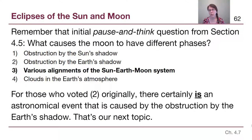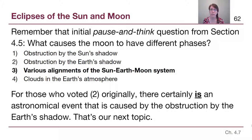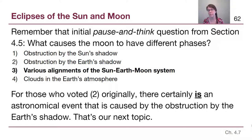We start with a reminder that when we discussed phases of the moon, we talked about the common misconception that the Earth's shadow is what causes our monthly phases of the moon. There certainly is an astronomical event that includes the Earth's shadow, and once we've learned about it, it may be more easily distinguishable in our minds what is a phases-of-the-moon situation and what is an Earth's-shadow situation.